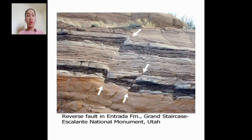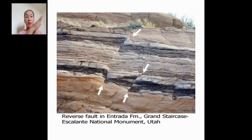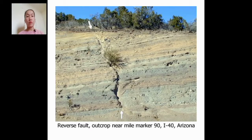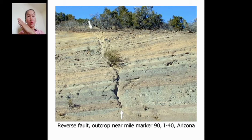These are examples of reverse faults. Makikita ninyo yung hanging wall ay tumaas and then yung foot wall ay bumaba. Gamitin natin yung kamay natin — isunod lang natin yung paggalaw sa pattern nung nasa picture. Yung pattern ng ating kamay, ganyan siya — ibig sabihin ito ay reverse fault kasi yung hanging wall ay nag-move pataas. Another example — this is also a reverse fault: isunod lang natin yung kamay natin sa pattern ng picture, makikita ninyo yung hanging wall ay nag-move pataas.